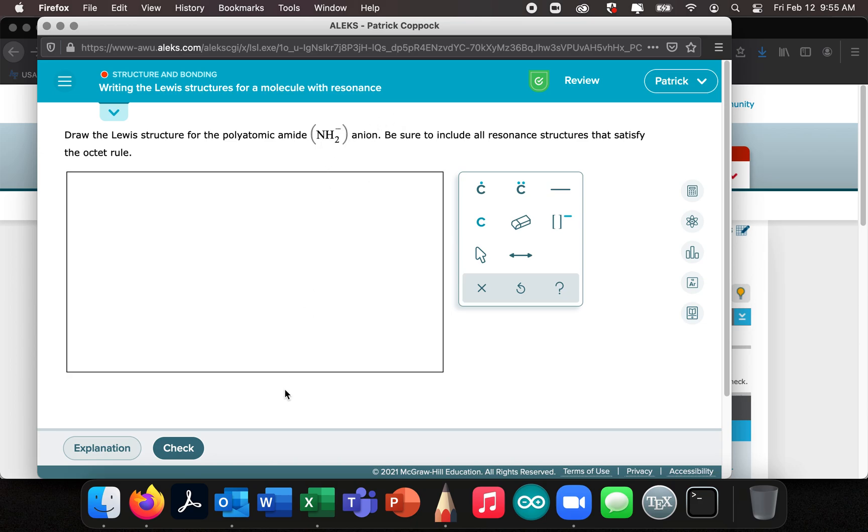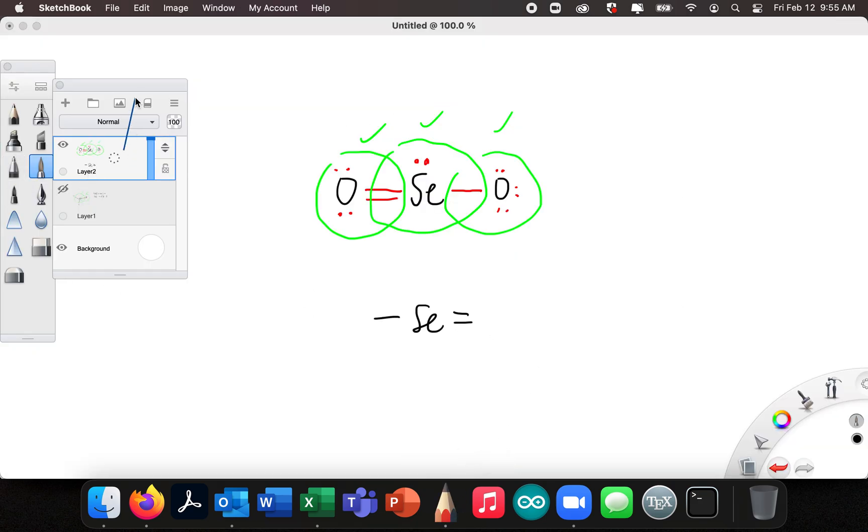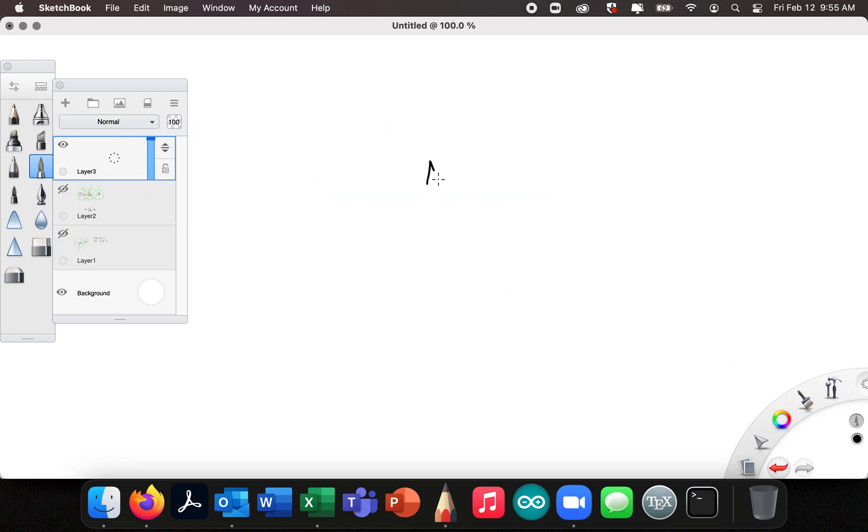All right. So NH2 minus anion. The NH2 minus anion. So I've got to come over here. N, H, H. One, two, three, four, five. But it's minus, right? It's NH2 minus. So I need an extra electron. And there it is. Okay. So I'm going to take this one and go bump and bump. Redrew those electrons. I'm done. There's no double bonds here. No triple bonds. I cannot have resonance. So that's done.